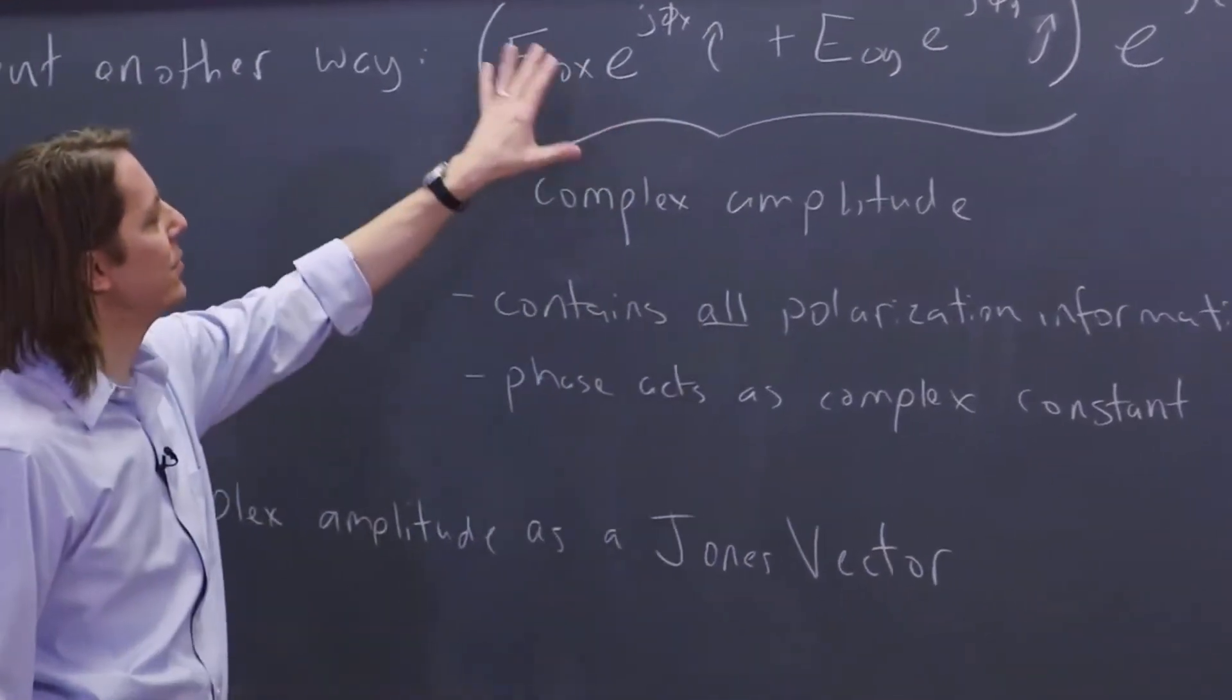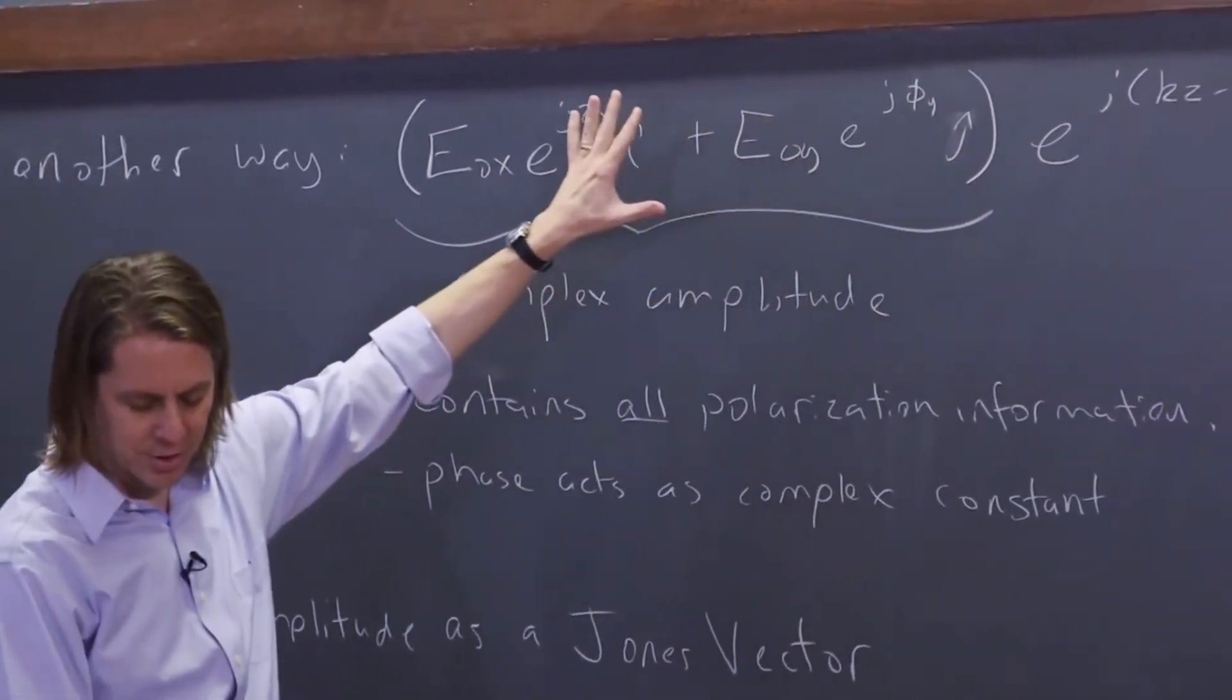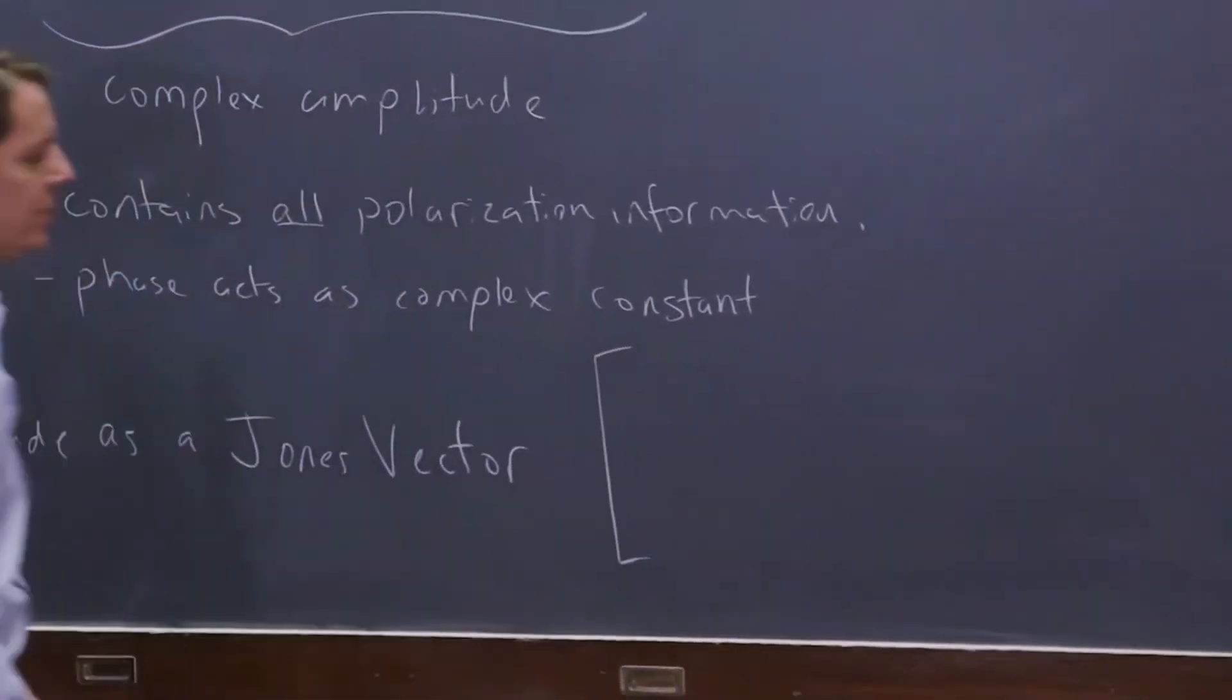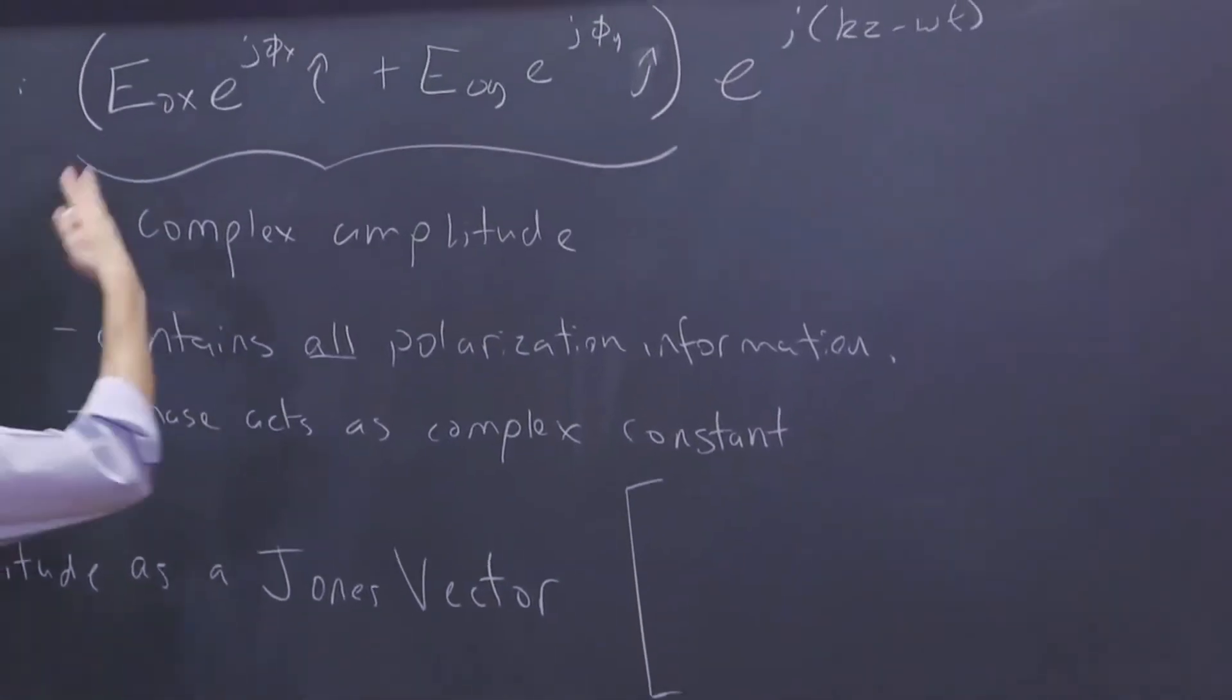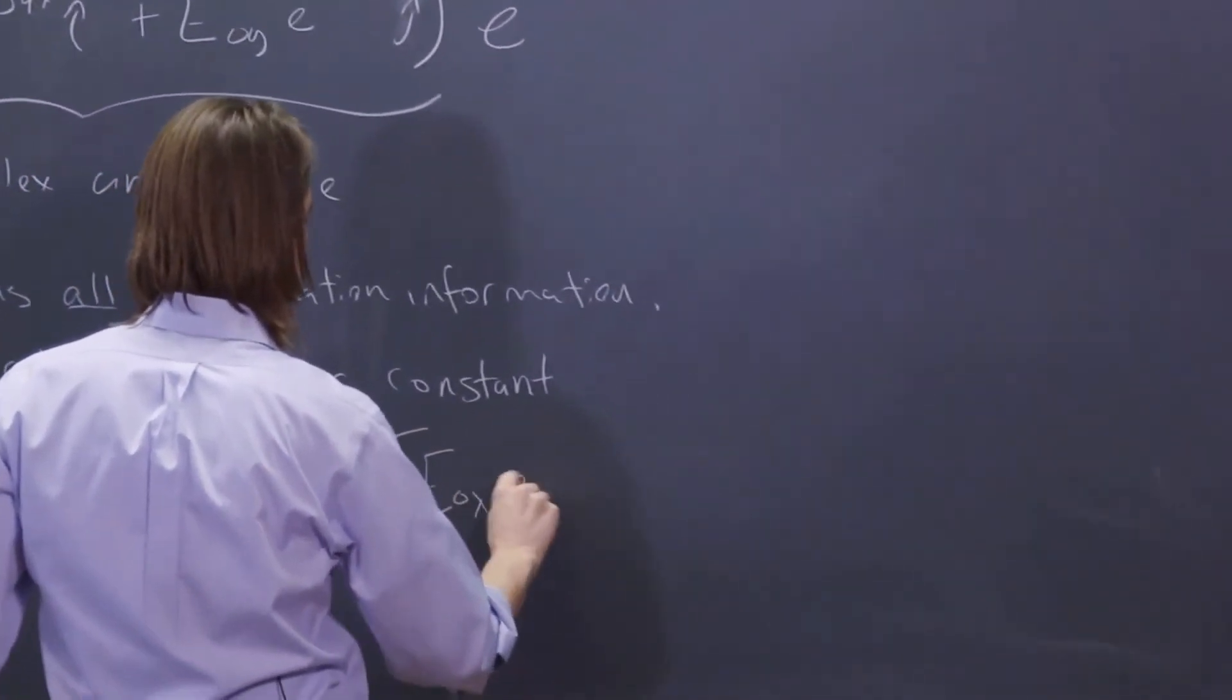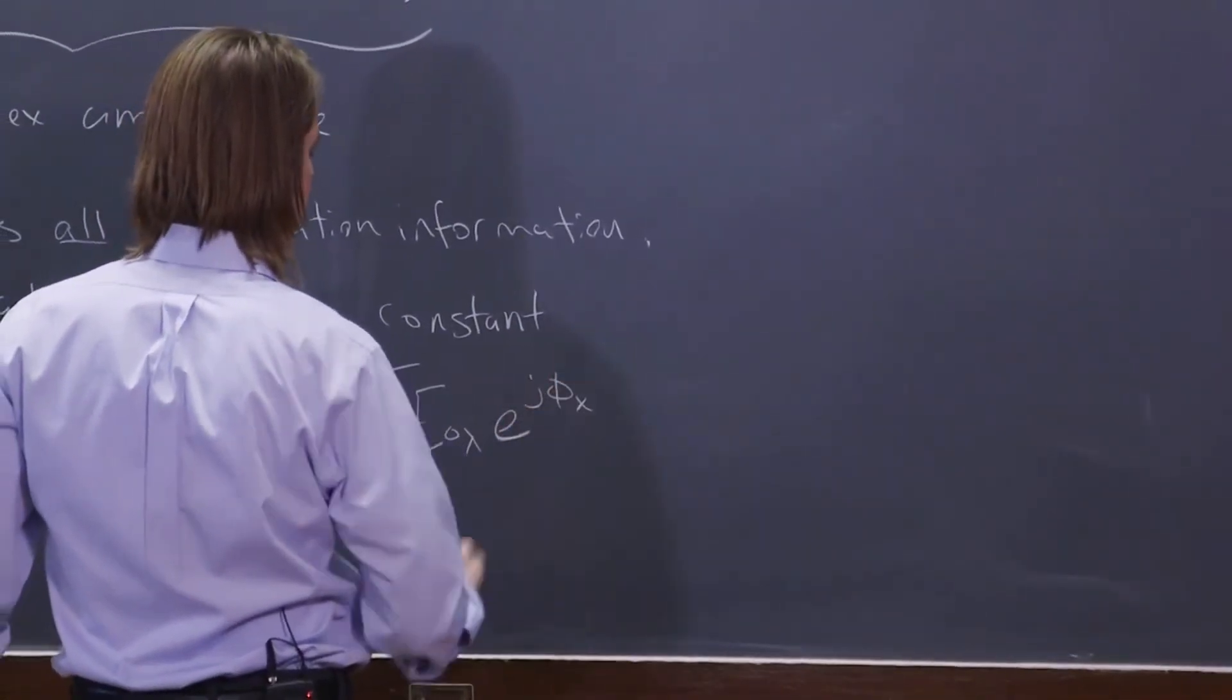Because you can see it is a vector. It's got a component on the X direction, and it's got a component on the Y direction. So the way you usually write it is like this, is you put the horizontal component on top. In this case, horizontal usually would be X. So we have E naught X, E to the J phi X.